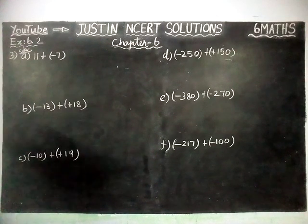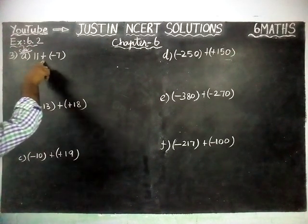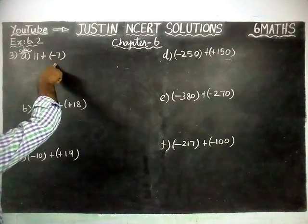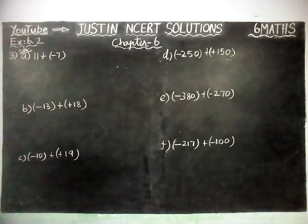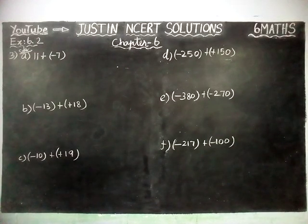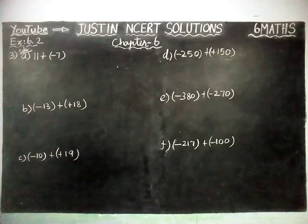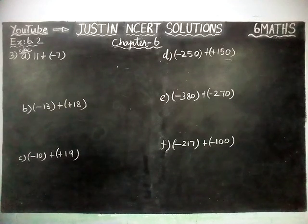The first one is 11 plus minus 7. When we are adding two integers, we have to see the sign — sign is very important. If both signs are the same, we have to add. If the signs are different, we have to find the difference. Same sign: add. Different signs: difference.